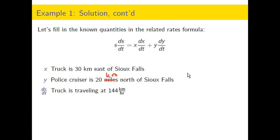The truck is traveling, and finally the units are right. The truck is traveling at 144 kilometers per hour. The police car is traveling at 180 kilometers per hour. So those are our differential quantities.